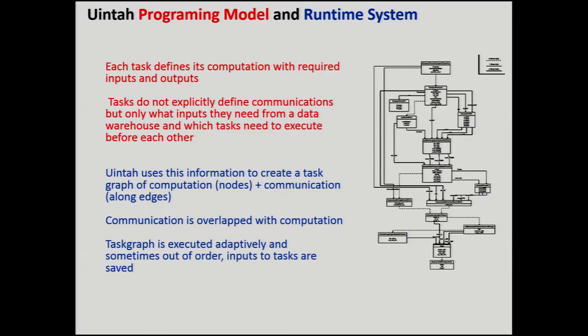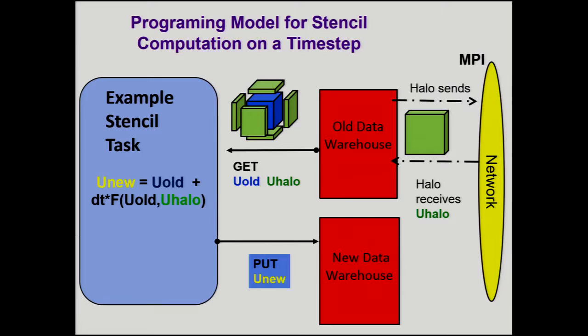Here's a programming model example. We have a simple stencil calculation. The blue block is what's owned by the patch, the green are the ghost or halo elements that come in off the network because dependencies are specified automatically. The task just says: get me the old solution u_old and halo elements. Then the calculation is u_new equals u_old plus dt times some function of the old and new. Then we put u_new back into the new data warehouse. That's a model for all calculations — they're all much more complicated, but this gives you an idea of the relatively simple programming model.